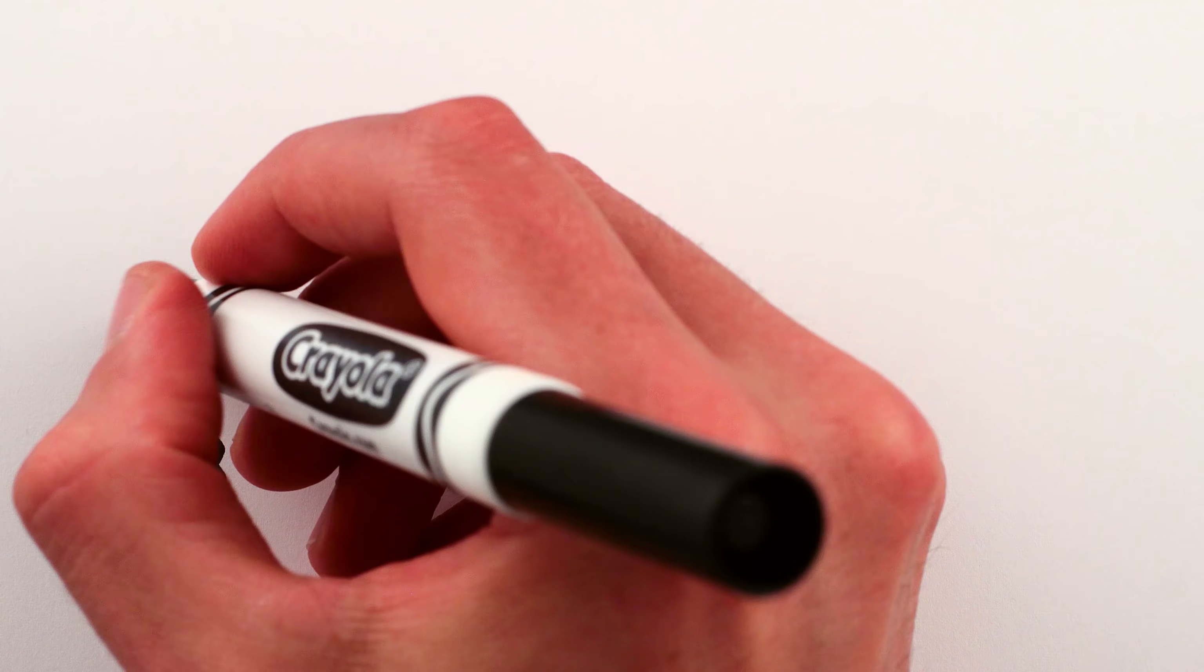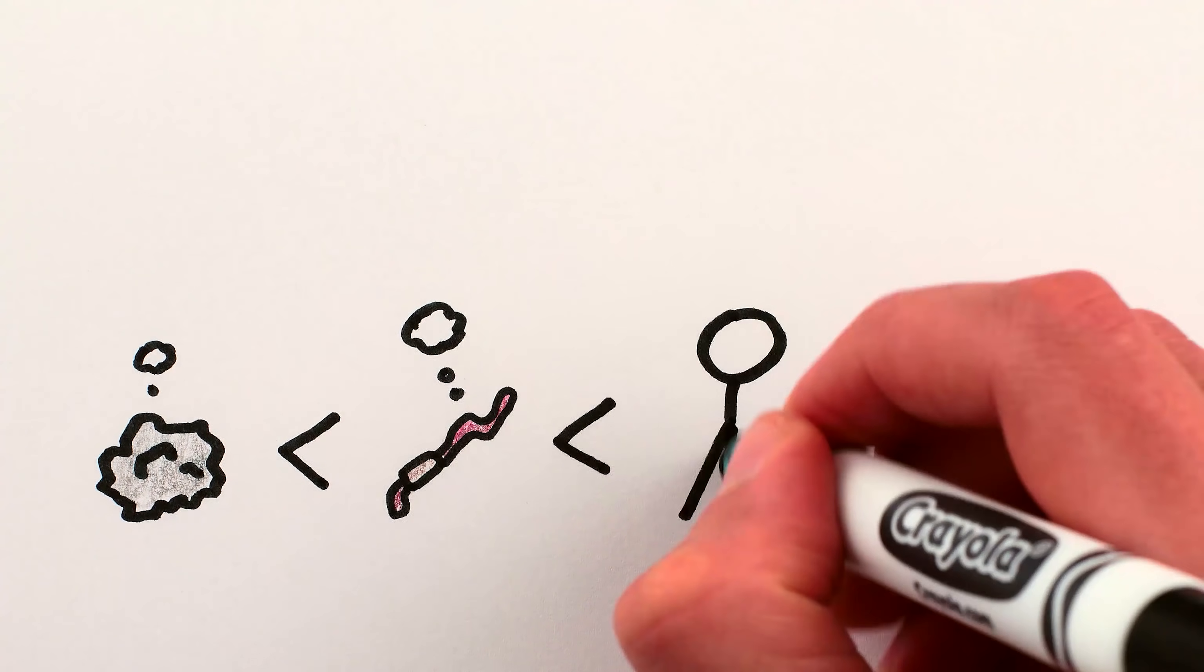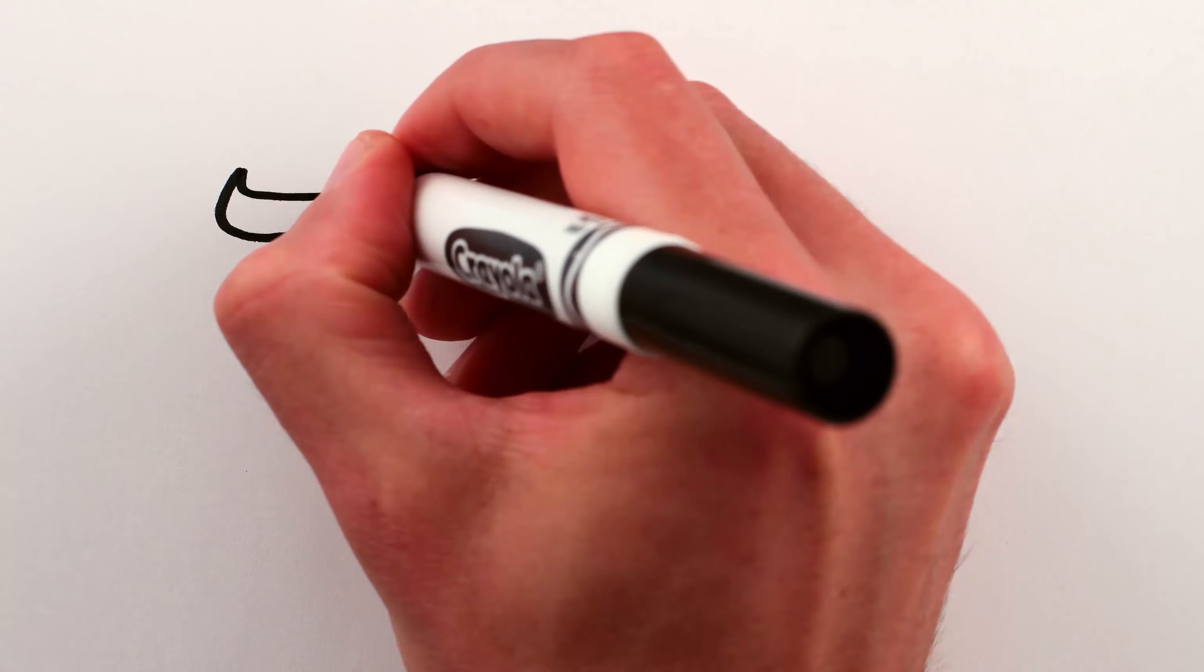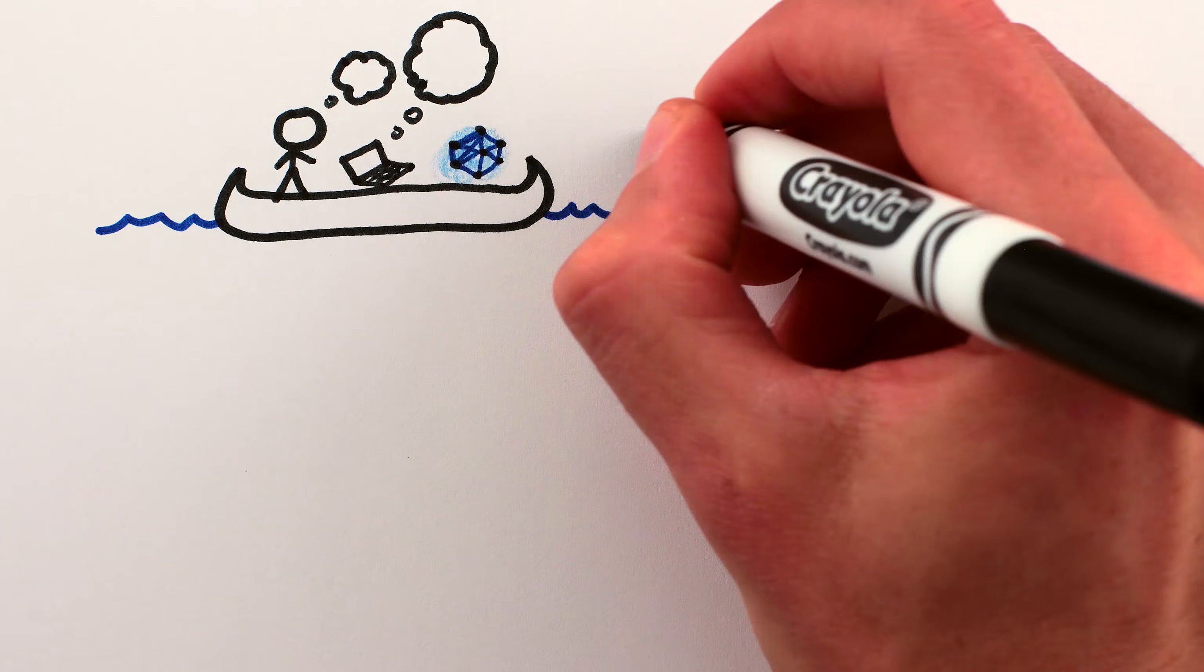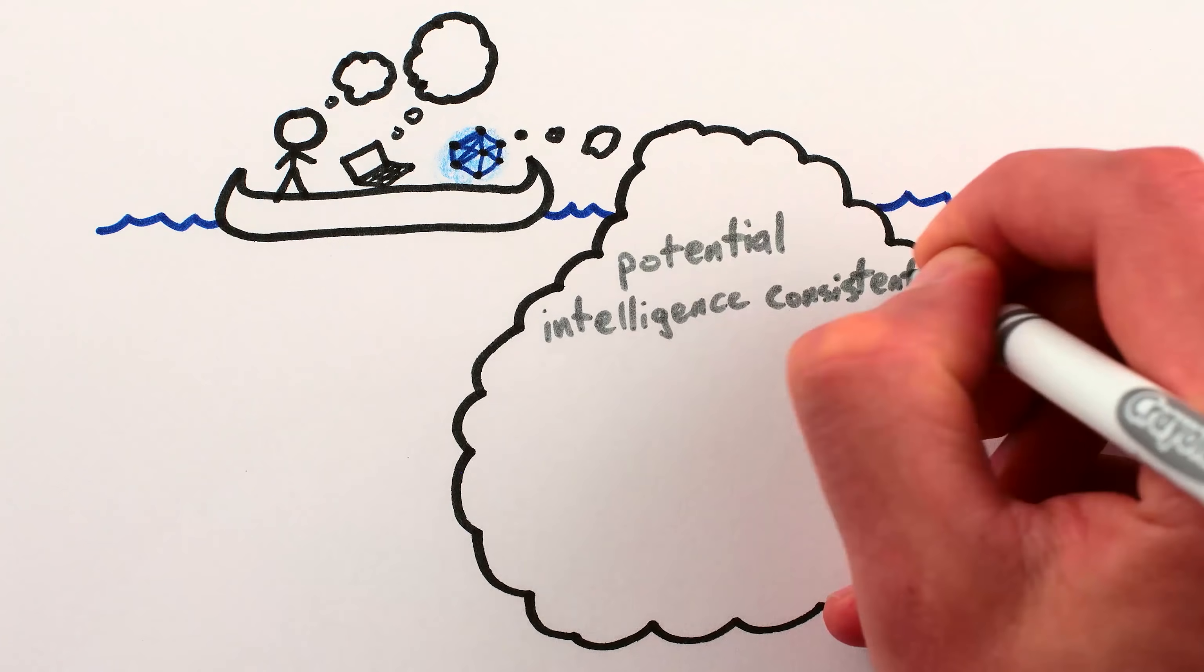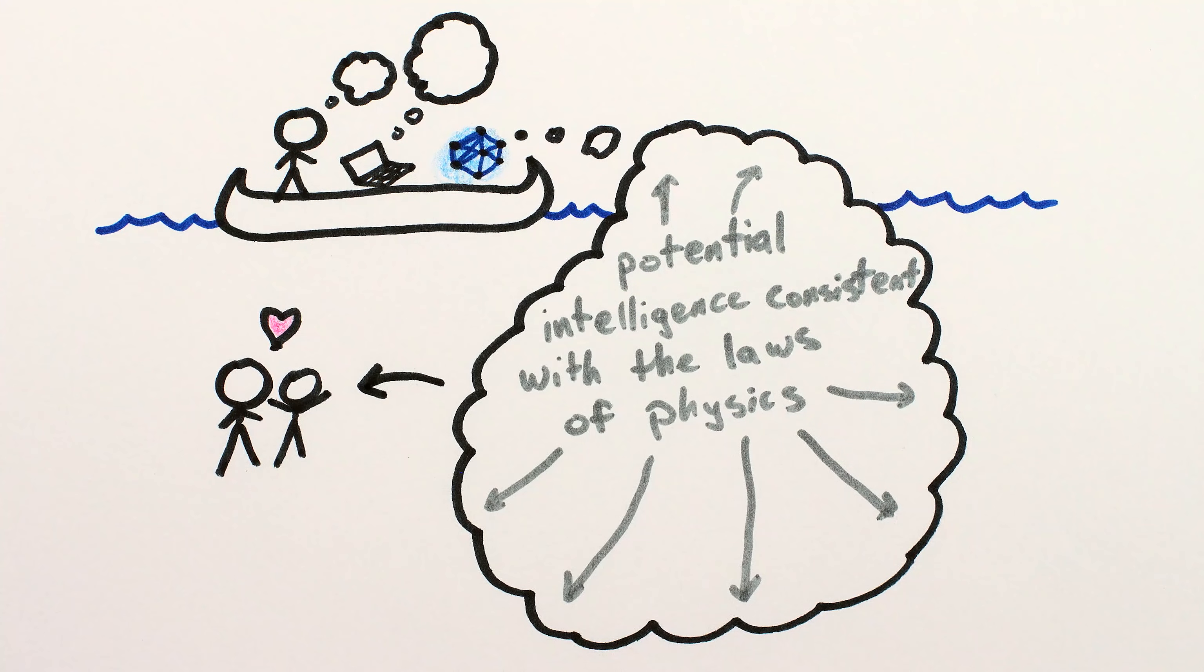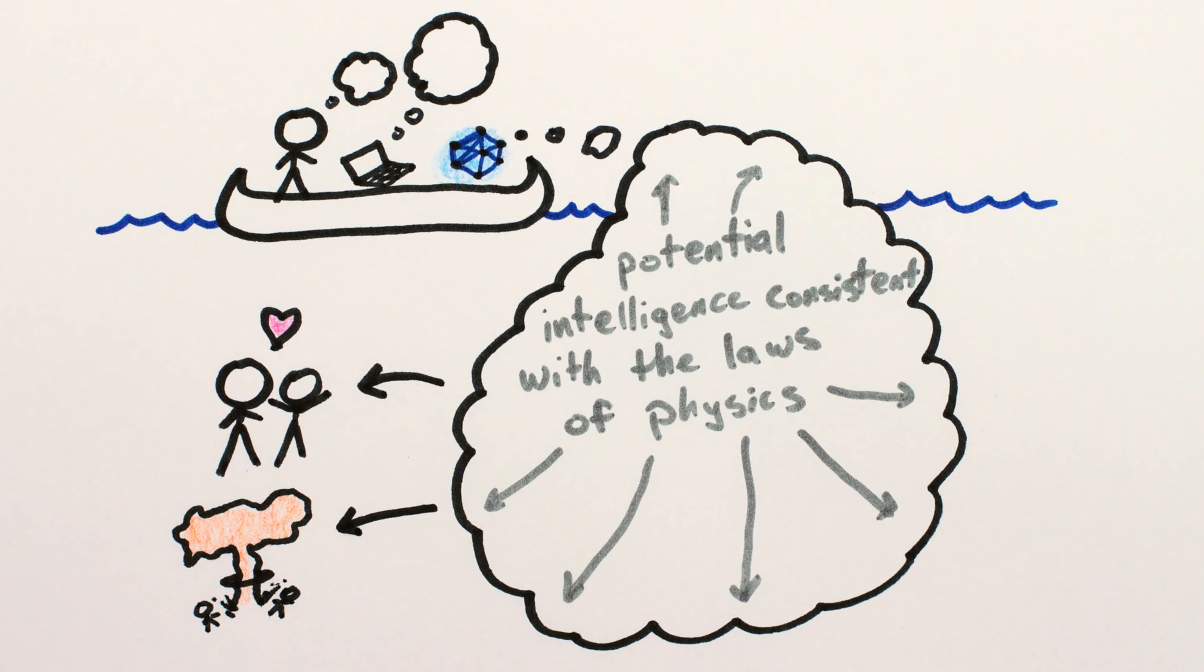It's not a stretch to say that earthworms process information better than rocks and humans better than earthworms. And in many areas, machines are already better than humans. This suggests that we've likely only seen the tip of the intelligence iceberg and that we're on track to unlock the full intelligence that's latent in nature and use it to help humanity flourish or flounder.